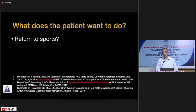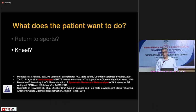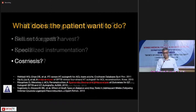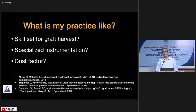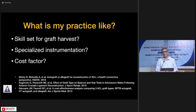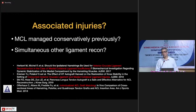It's important to understand what the patient wants to return to. Does he want to go back to sport, and at what level? Does he want to kneel down? If so, I'd think twice about a BTB graft. Also critical is my own practice pattern — do I have the skill sets for various graft harvests? Do I have the specialized instrumentation required? We also have to look at cost and affordability, and whether there are any associated injuries requiring simultaneous other ligament reconstruction.